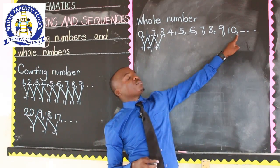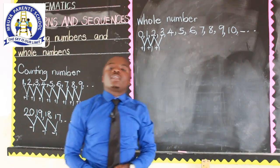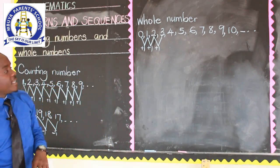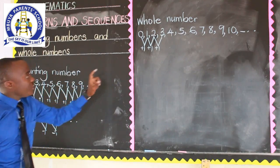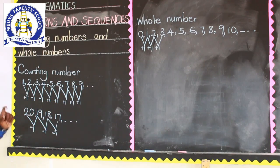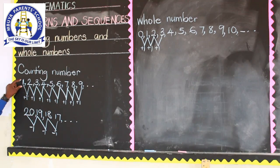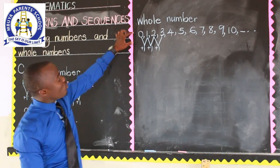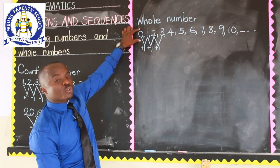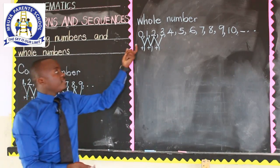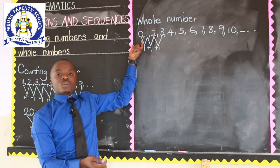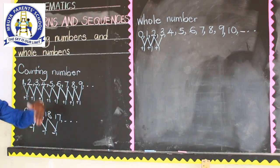To get the next one from ten, you will also add one to get 11, 12, like that. When you look at counting numbers and whole numbers, the difference is that counting numbers start with one, whereas whole numbers — the first whole number is zero. The similarity is that they keep on increasing by one.